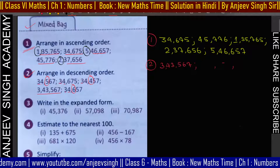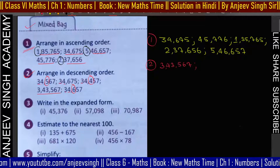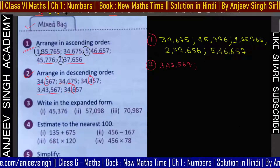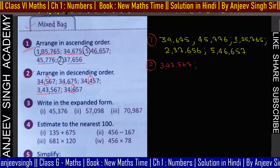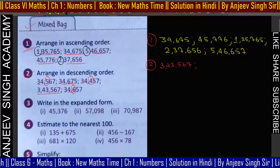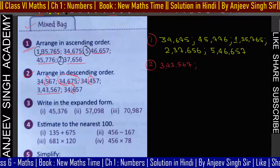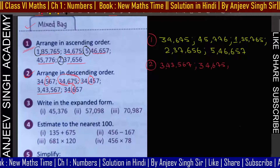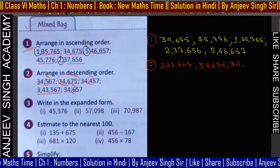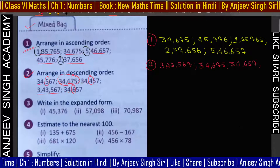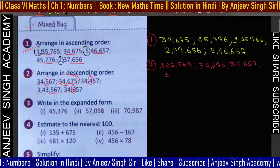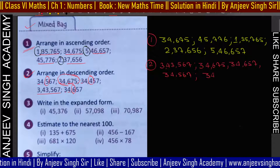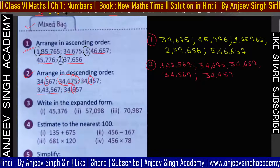एक number और है जिसको ध्यान नहीं दिया। यहाँ 6 और 6 common है इन दोनों में, तो हम अगले digit पर जाएंगे। यह bigger value हो जाएगा। तो descending order में: 3,4,6,7,5 comma 3,4,6,5,7 comma 3,4,5,6,7 semicolon और 3,4,4,5,7।